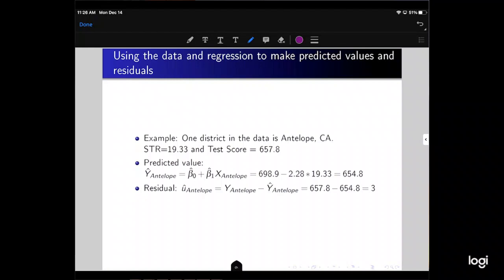Using the data and regression to make predicted values and residuals. So let's take, for example, one district in the data set, and that's Antelope, California. If we go to that row in our data, we would find that the student-teacher ratio on average for Antelope, California, is 19.33 students per teacher, with an average test score of 657.8. So these are the actual data points.